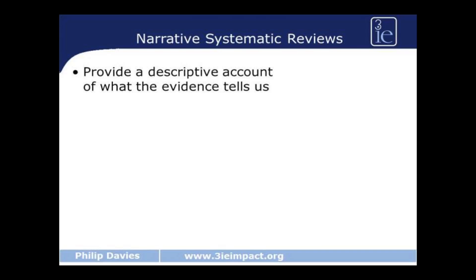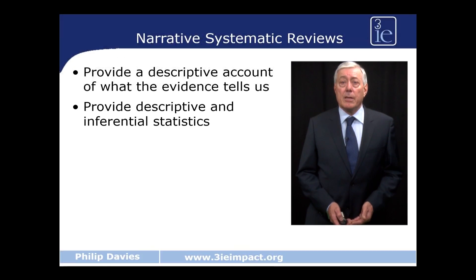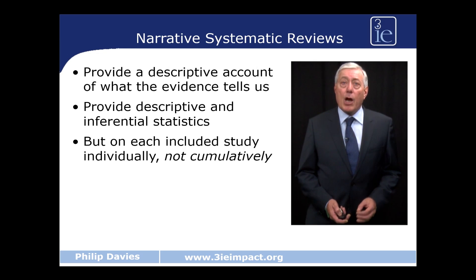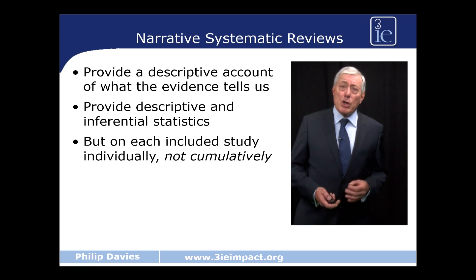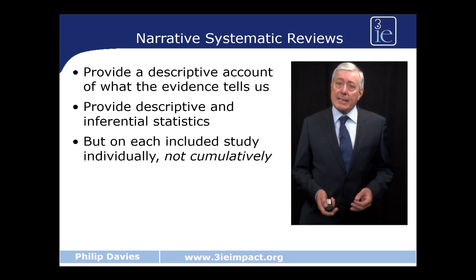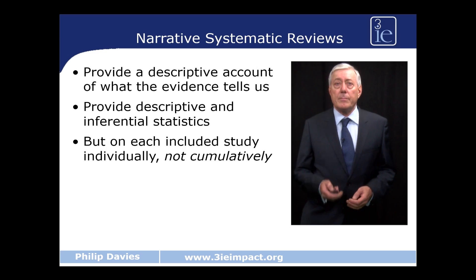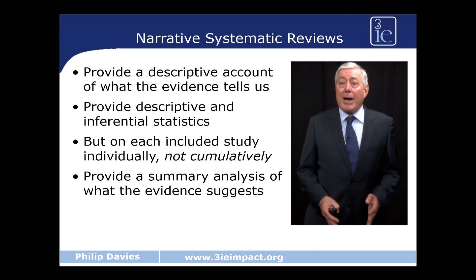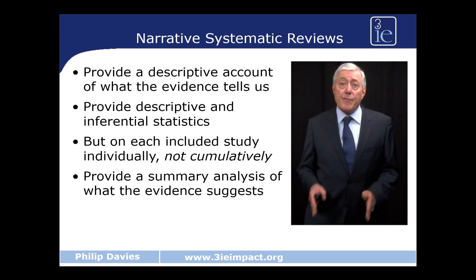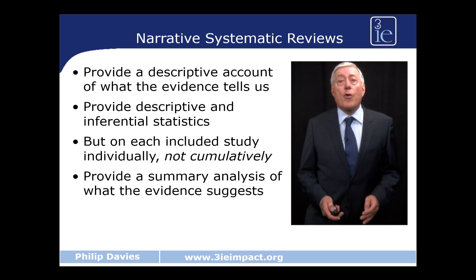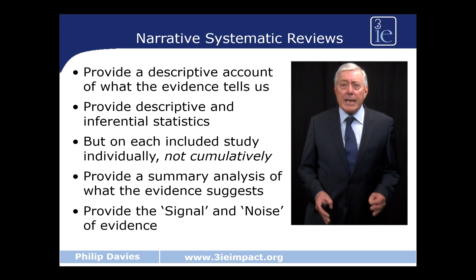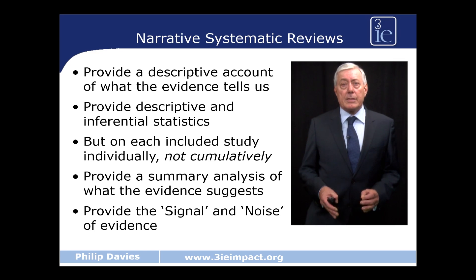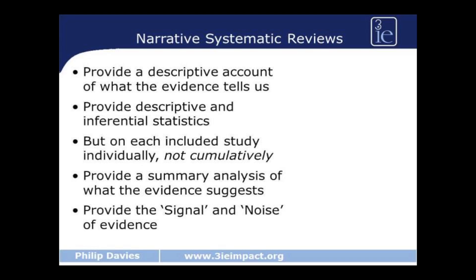When we can't do a statistical meta-analysis, we undertake what's called a narrative systematic review. This simply provides a descriptive account of what the evidence in each individual study tells us. We look at the descriptive statistics and any inferential statistics, but from within each study rather than combining them. Because we're now dealing with apples and oranges, we can't combine them. However, these studies can tell us a great deal about the type of interventions and the types of effects each one achieved. It can give us a summary of the overall evidence, and in many cases some idea about the signal, the strength of the evidence, and the noise coming from the different nature of different studies.